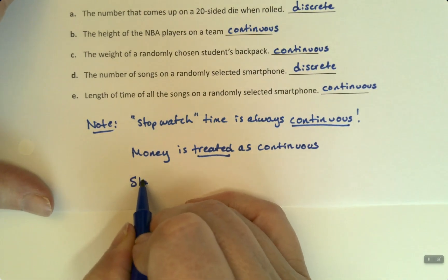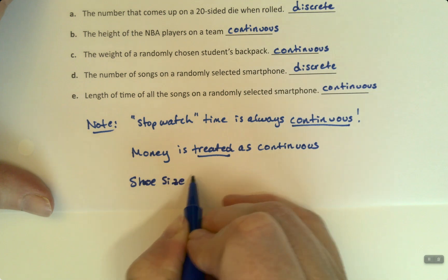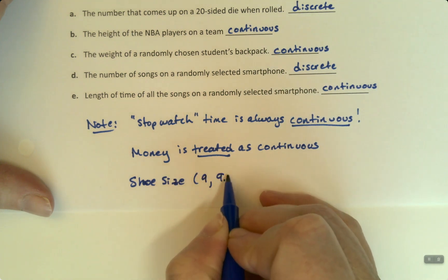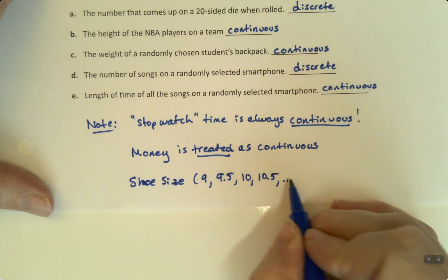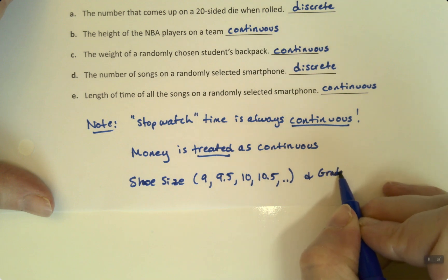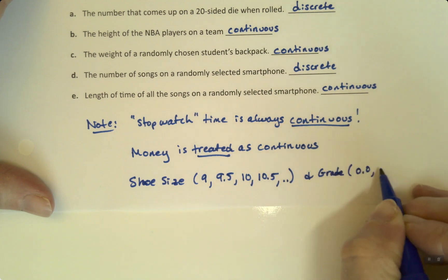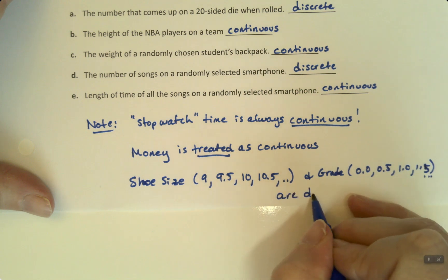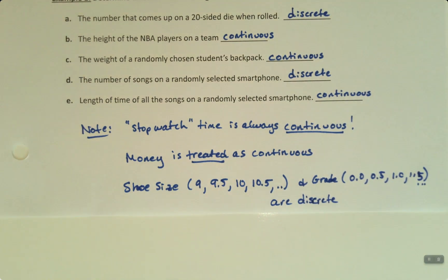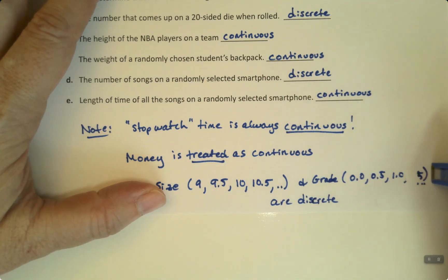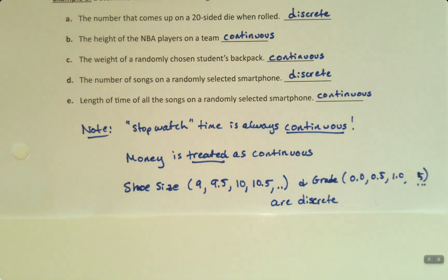Shoe size. So, if we think, you know, nine, nine and a half. This would be American shoe size. European shoe sizes don't have the halves and so on. And your grade in a class, right? Your grade in a class is 0.0, 0.5, 1.0, 1.5, etc., are discrete. Even though they have a decimal place on there, it's a very limited decimal place, and we can still count the number of outcomes. And so, since we can count the number of outcomes, that is discrete.